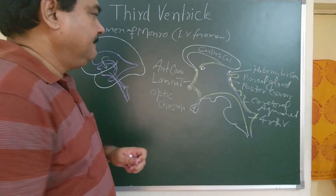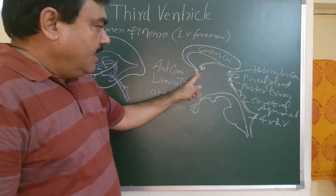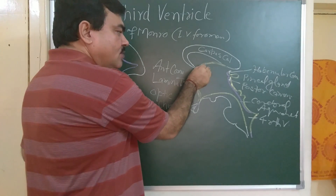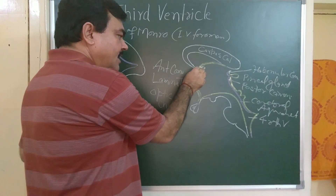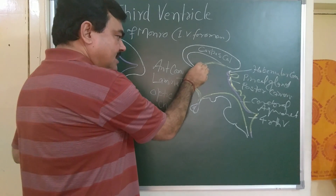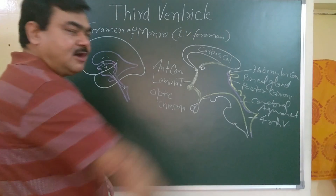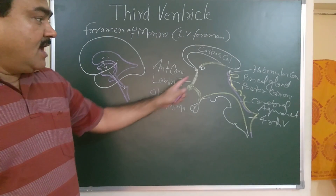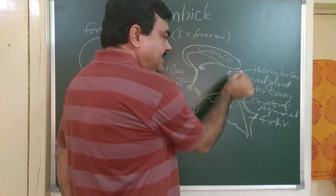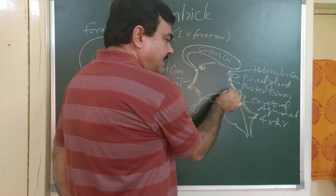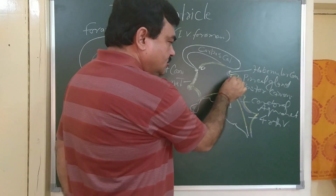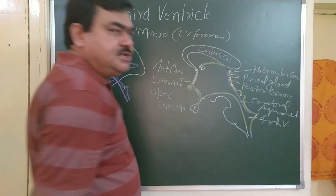Regarding the boundaries of the third ventricle: anteriorly it is bounded by the fornix, the anterior commissure, and the lamina terminalis. Posteriorly it is bounded by the pineal gland, the posterior commissure, and the commencement of the cerebral aqueduct.